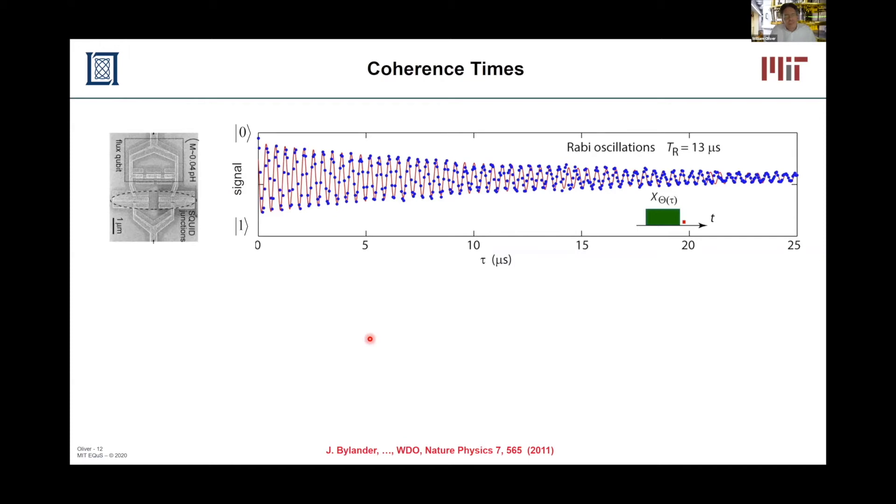So first of all, coherence times. This is a picture of a qubit from about 10 years ago or so. It was the first qubit superconducting qubit to exceed 10 microseconds of coherence time. What's shown here are Rabi oscillations, which if you think of driving your qubit on a Bloch sphere, there's a North Pole and a South Pole and you're just oscillating the qubit state around the Earth between the North and South Pole. But over time, you can see that it decays and this decay is indicative of some decoherence.